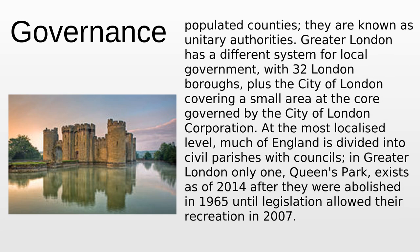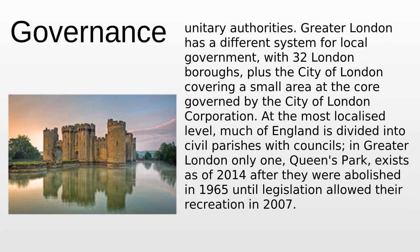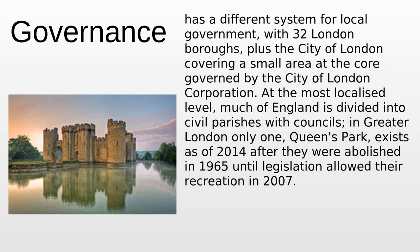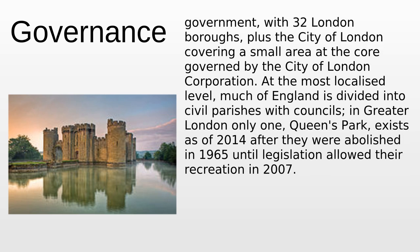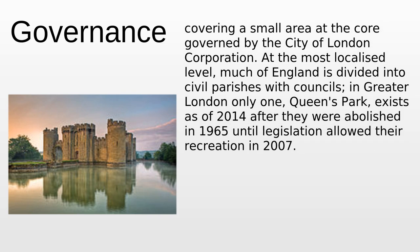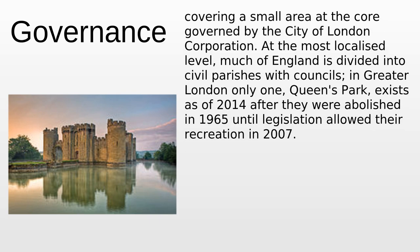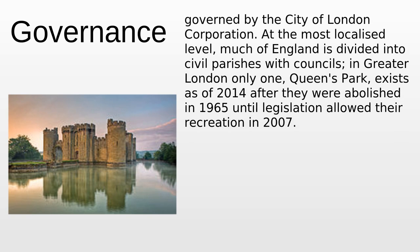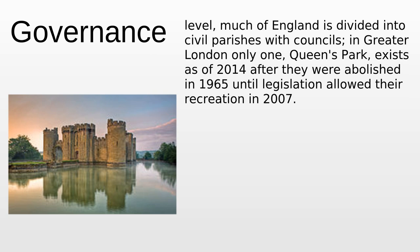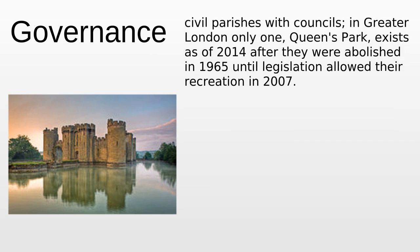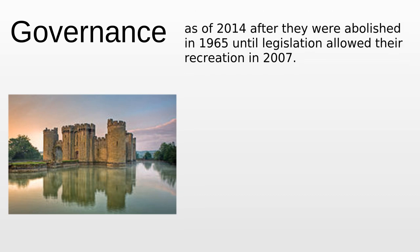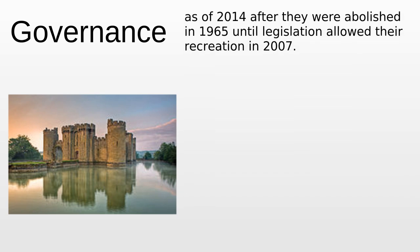Greater London has a different system for local government, with 32 London boroughs plus the City of London, governed by the City of London Corporation. At the most localized level, much of England is divided into civil parishes with councils. In Greater London only one parish, Queen's Park, exists as of 2014 after they were abolished in 1965 until legislation allowed recreation in 2007.